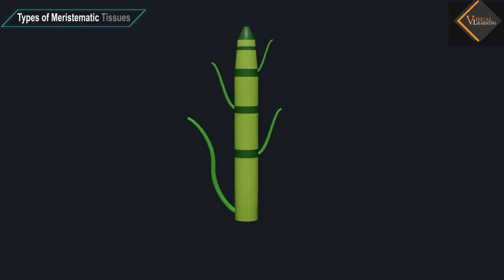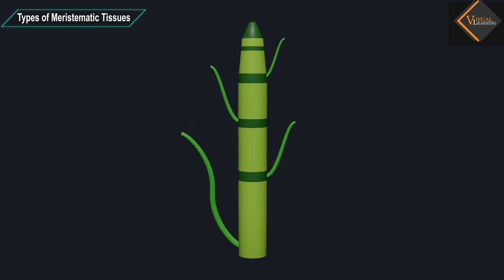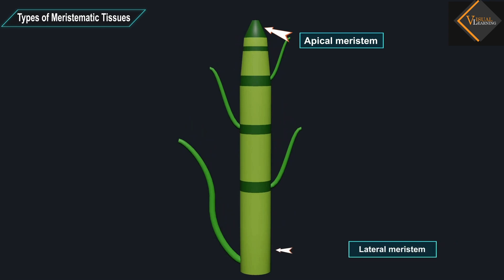Depending on the region where they are present, meristematic tissues are classified as apical, lateral, and intercalary.